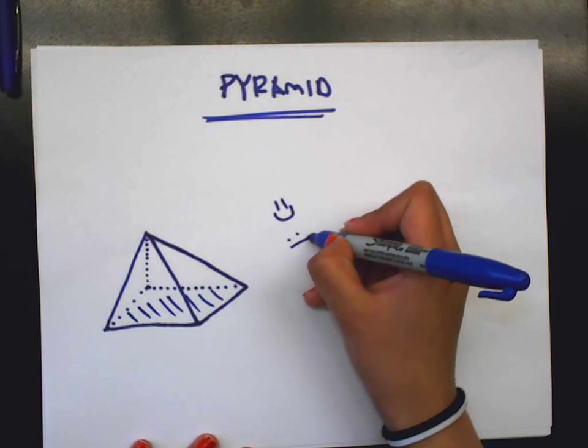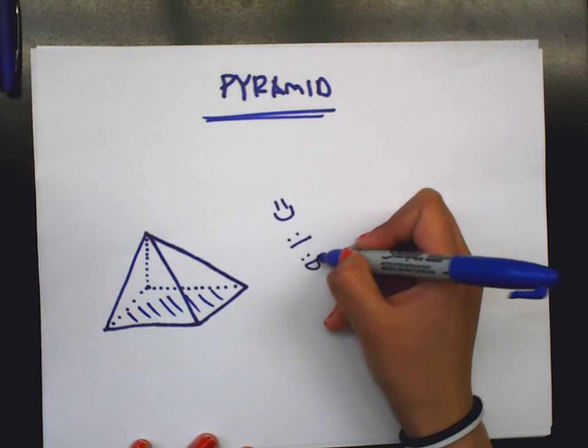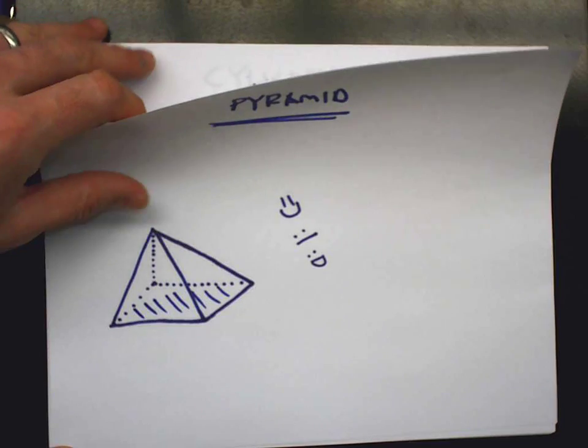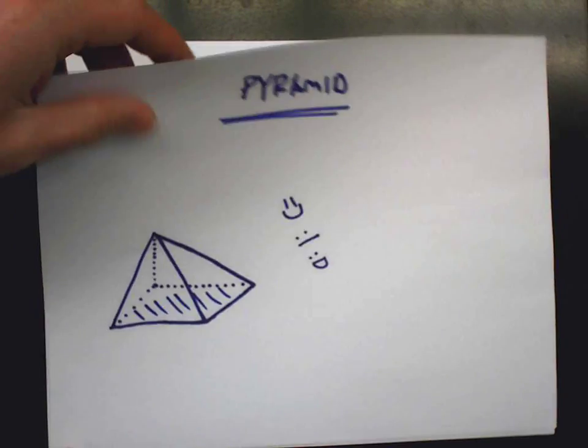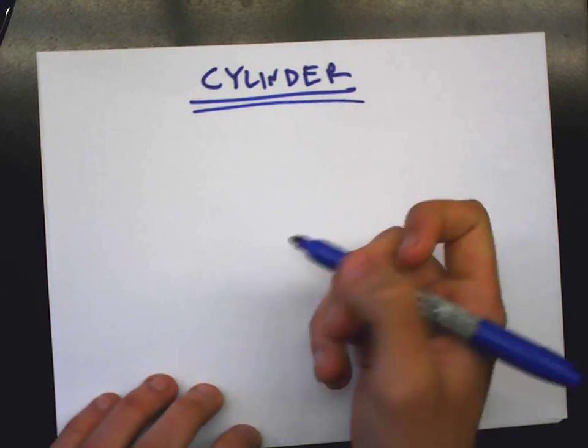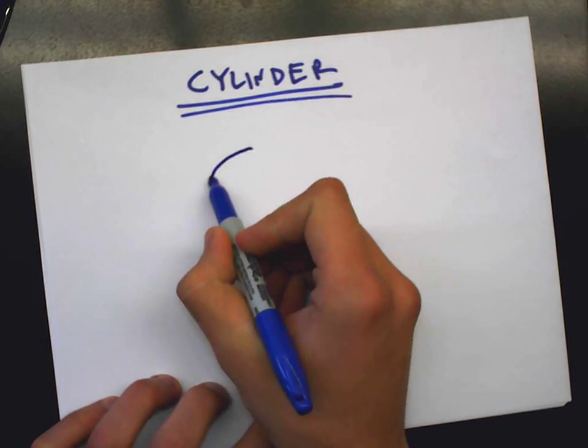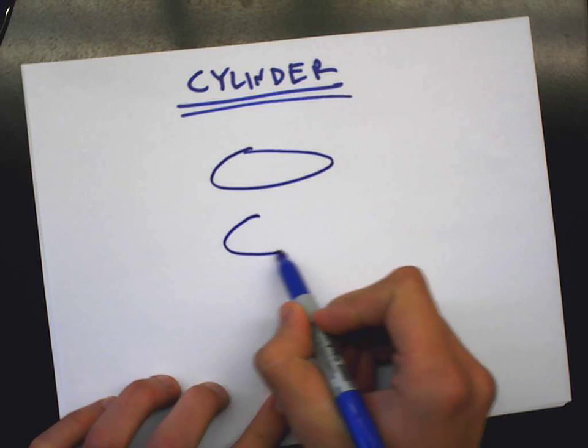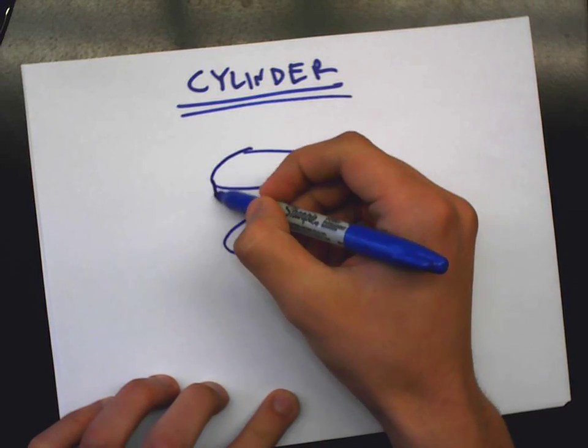Who's next? Kyle Hamburger. Alright, Kyle's up. You're going to do a cylinder for us. Alright, I'm Kyle. I'm going to be doing a cylinder. Super easy. All you've got to do is draw two ovals and then just connect them.